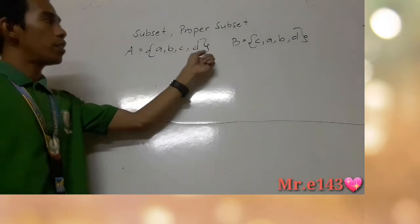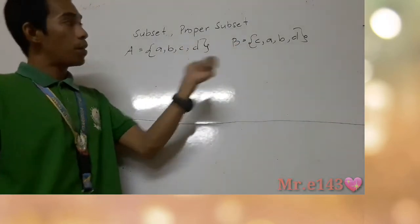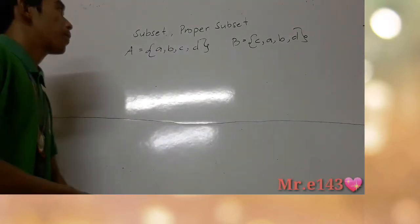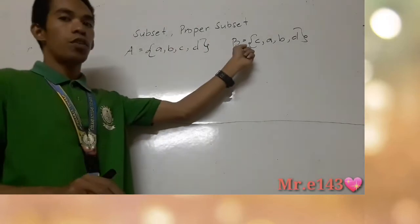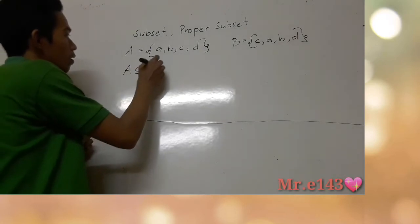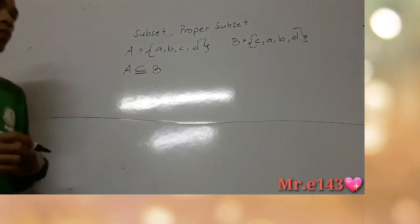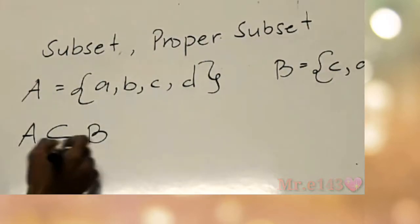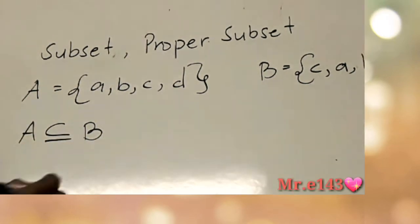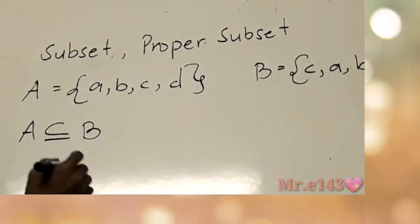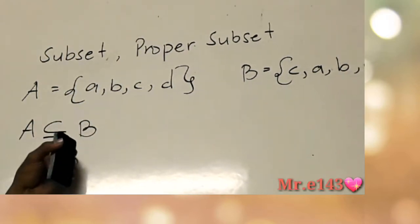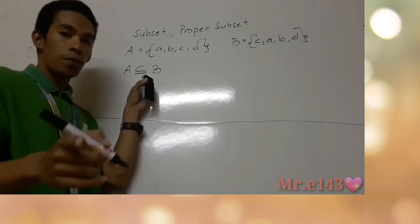So for example, set A has elements {a, b, c, d} and set B has elements {c, a, b, d}. We can say that A is a subset of B. The symbol for subset looks like a U lying on its side — that's the symbol for subset.